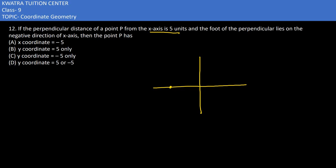So our y-coordinate can be here on the positive side or on the negative side. That means y-coordinate can be 5 or it can be minus 5. If you take it down, the foot of the perpendicular can be anywhere along the negative x-axis, so the y-coordinate can be positive 5 or negative 5.